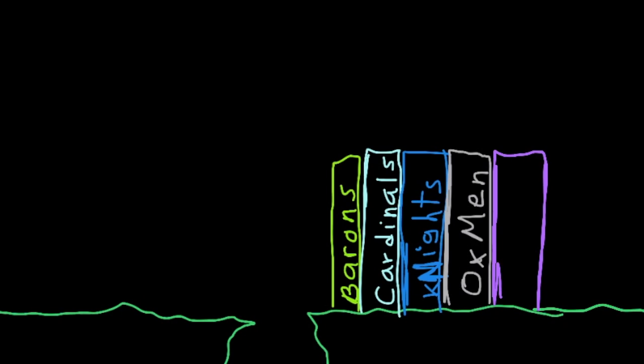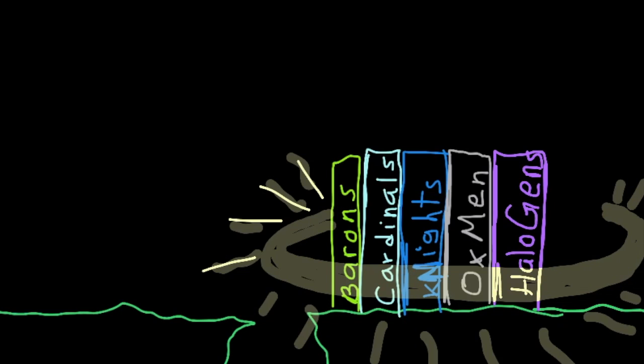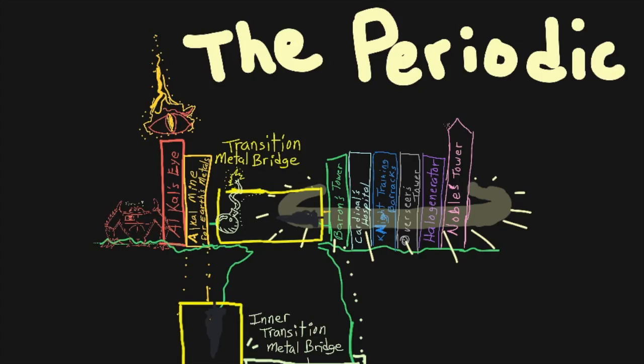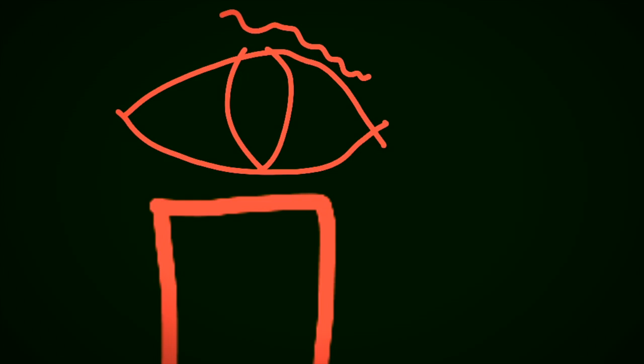Now, how do I remember all of this? Well, I made up a fake story that connects to the real information. I call this the periodic fable. Imagine a tall metal tower standing in a faraway land called Little Earth.